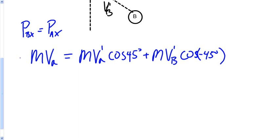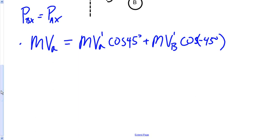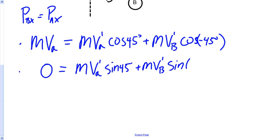Now, let's do our y direction. For the y direction, what we have here is since it's moving along the x axis to begin with, it has no momentum in the y direction before. Zero equals the momentum of the sum of the pieces in the y direction afterwards. So, that's M V A prime sine 45 degrees, plus M V B prime sine negative 45 degrees.